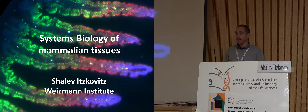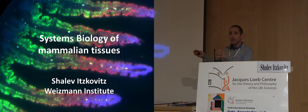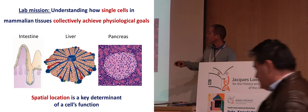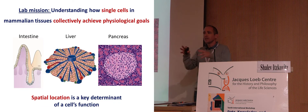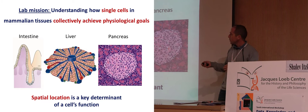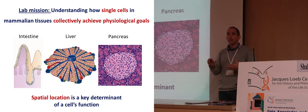Thank you very much for the kind invitation to participate in this fascinating conference. I'll tell you about systems biology of mammalian tissues. In my lab, we're interested in understanding how single cells work together within the context of the tissues in our body. We study the metabolic tissues — the intestine, the liver, and the pancreas. These tissues are not just random blobs of cells that all operate identically. They're highly structured, made of repeating anatomical units that are polarized by blood flow or by morphogens. The position of the cells within these units is a very important determinant of what the cells are going to do. We try to make this connection between the location of a cell within a tissue and its physiological function.